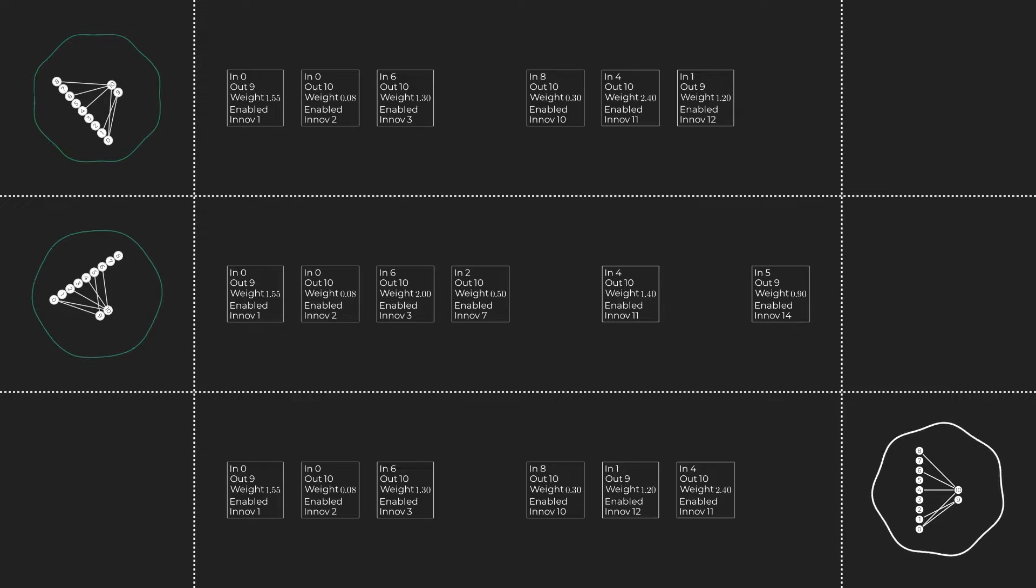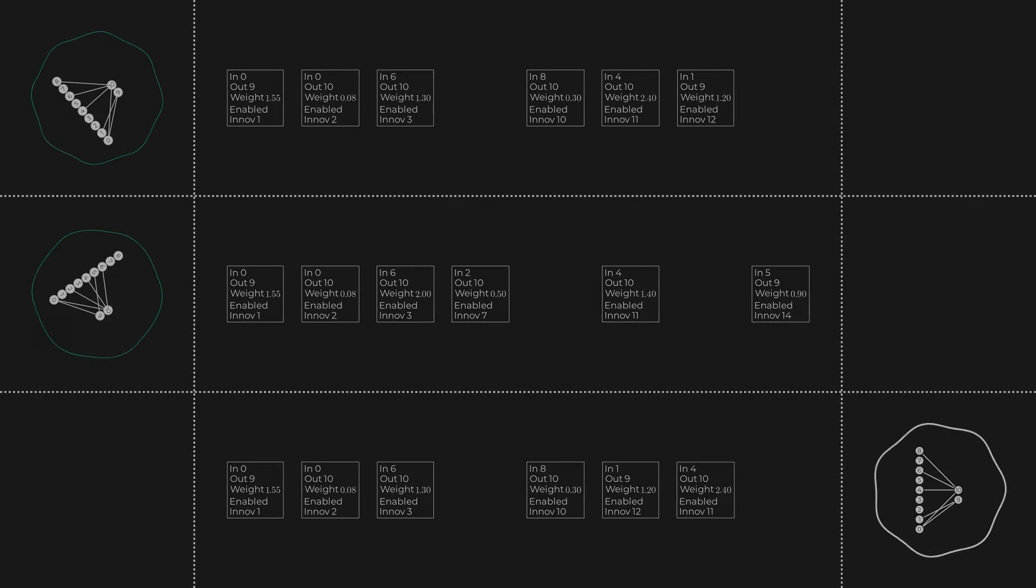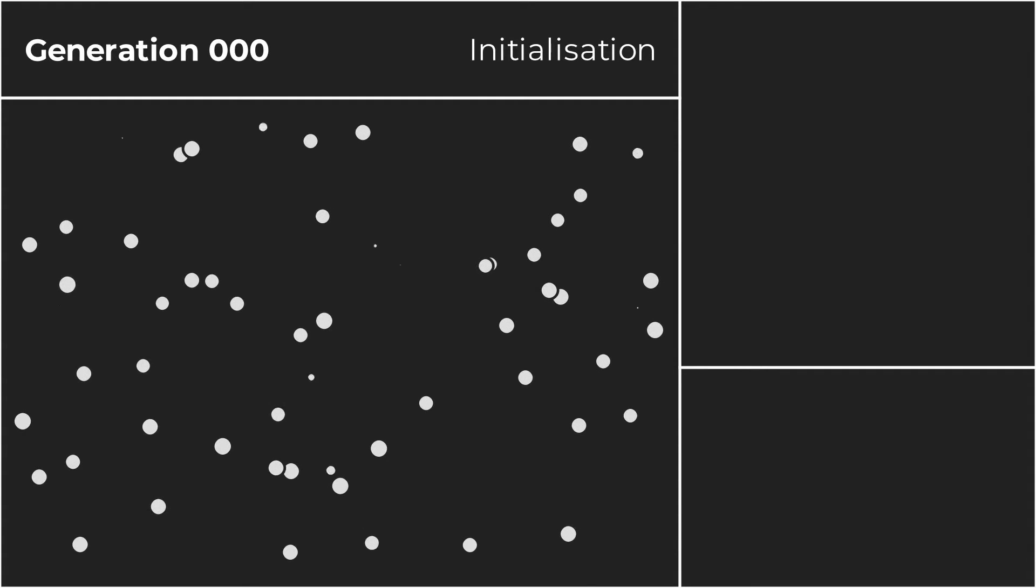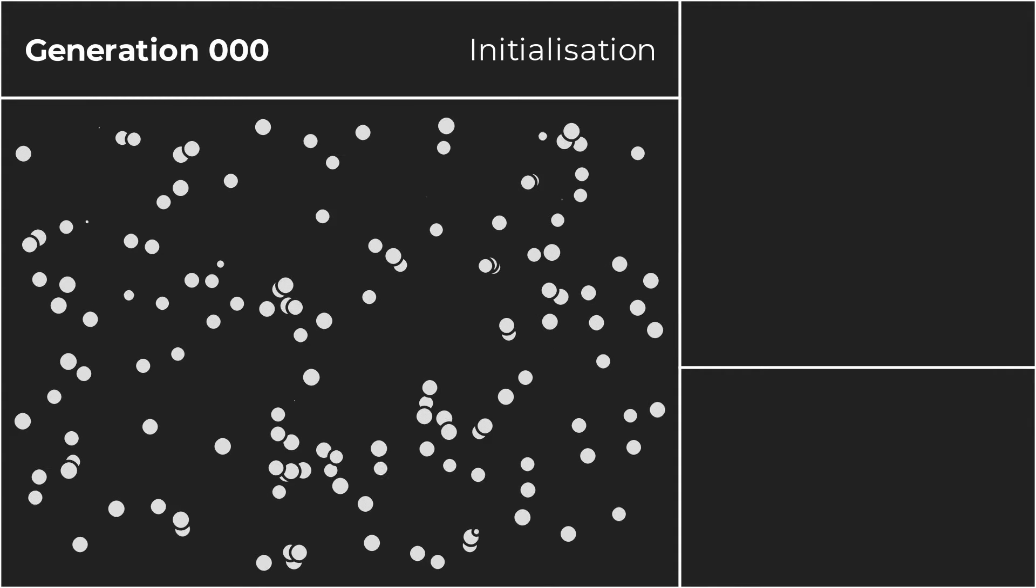With our foundational understanding of the NEAT algorithm in place, it's now time to put it to the test. Let's initiate an actual simulation to observe its effectiveness in training neural networks to play Lunar Lander. First, let's create an initial population of size 150. Each of these little dots represents a neural network like the ones we've seen before. Whenever one of them glows in blue, it indicates a mutation has occurred.